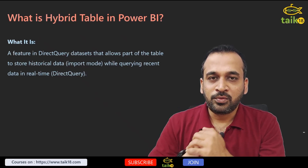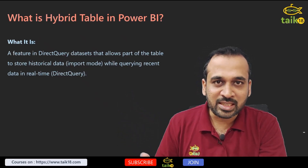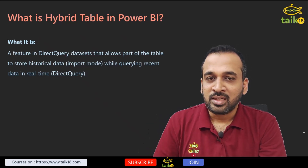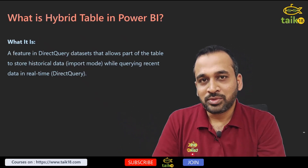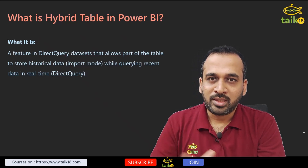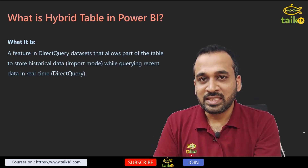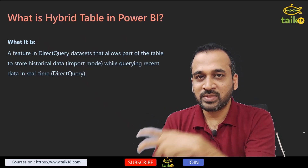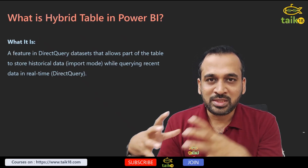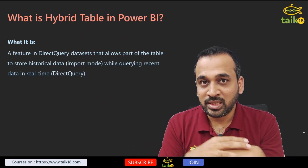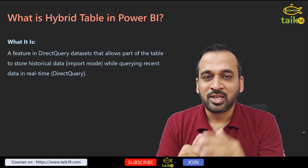A useful scenario for hybrid tables is when your historical data — from the past week and before — doesn't change, but only the current data is changing, like in stock market data. Old data stays in import mode and only recent data is fetched via direct query. This can also work in reverse: keep old partitions as direct query so users can fetch them on demand, while the current and previous week of data stays in import mode so the model only refreshes those recent days. The approach depends entirely on your specific use case.